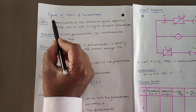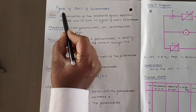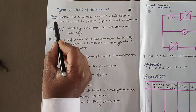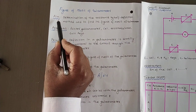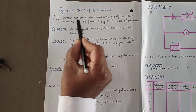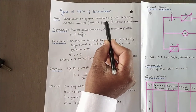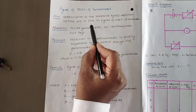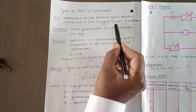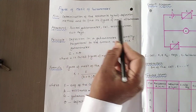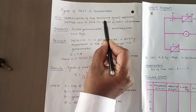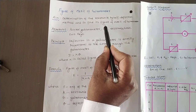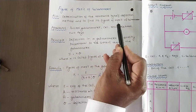This is the name of the experiment: figure of merit of galvanometer. The aim of the experiment is determination of the resistance by half deflection method and to find its figure of merit of galvanometer. So we are finding the resistance of the galvanometer and we are finding the figure of merit of the galvanometer.